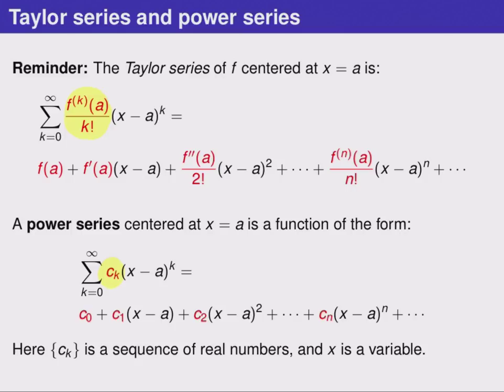If we'd like, we could make a Taylor series from a power series by making those coefficients c sub k have just the right form using derivatives and factorials, but we could really use any numbers we want. Here x is a variable and so we really do have a function.